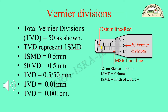Total Vernier divisions TVD is equal to 50 as shown on the diagram. TVD represents 1 SMD. 1 SMD is equal to 0.5 mm. Since there are 50 total Vernier divisions, 50 VD is equal to 0.5 mm. Therefore 1 VD is equal to 0.5 over 50 mm, which gives 1 VD equal to 0.01 mm.